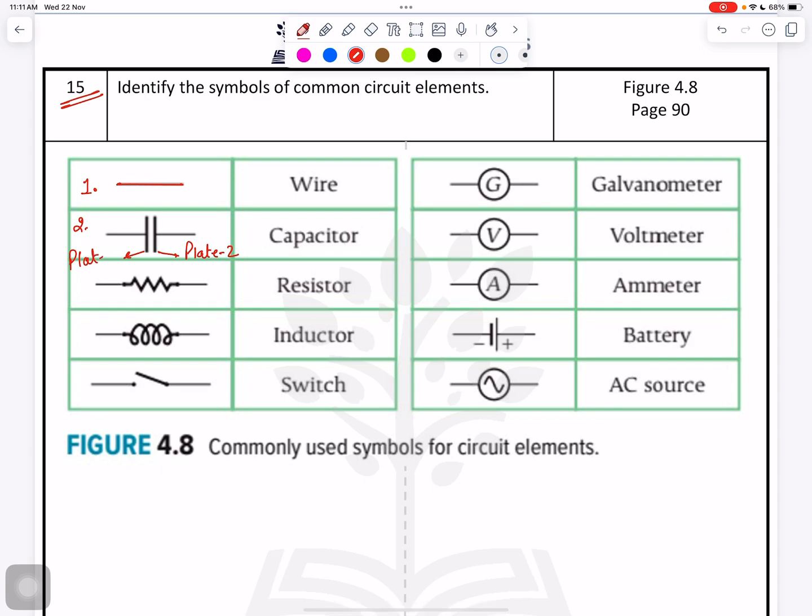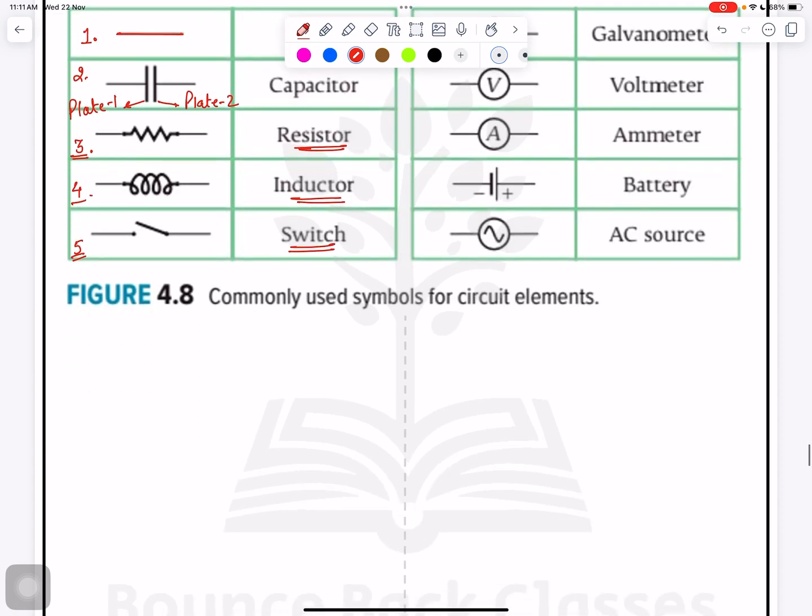Third is your resistor, fourth is your inductor, fifth is called switch. Which situation of the switch is this? Just try to understand.